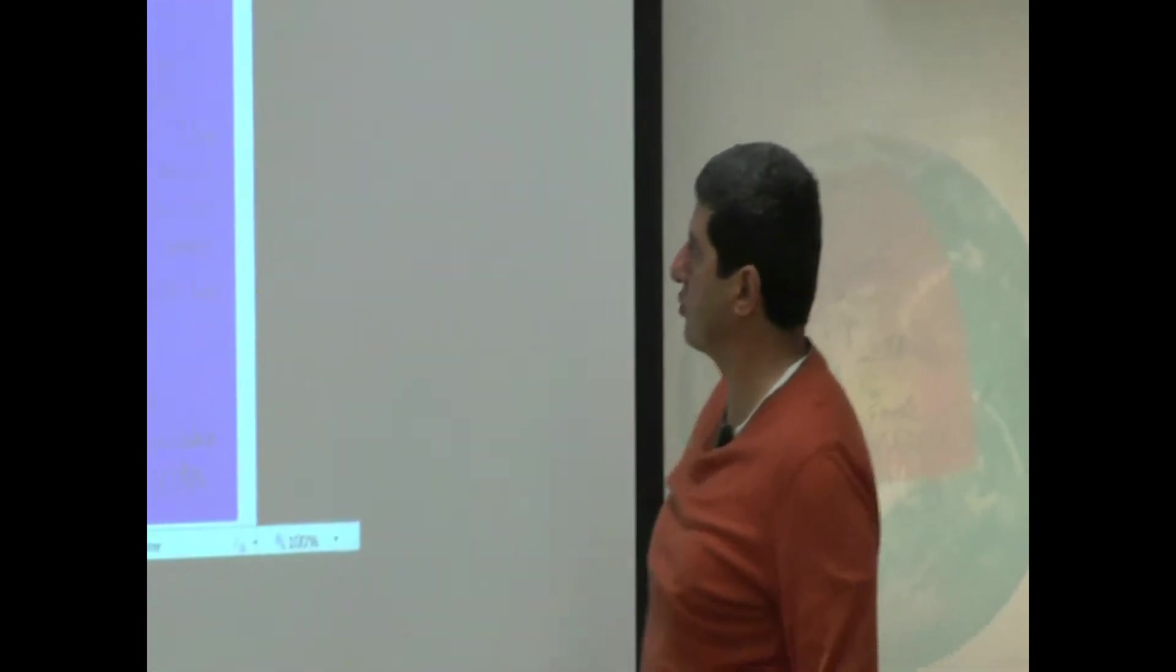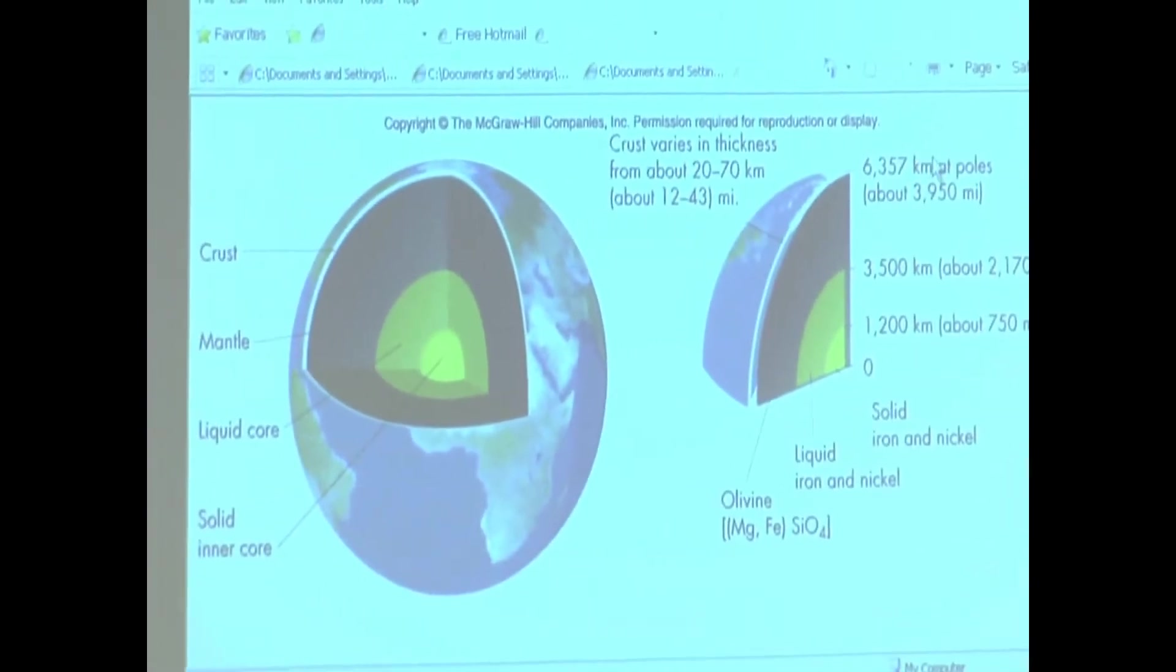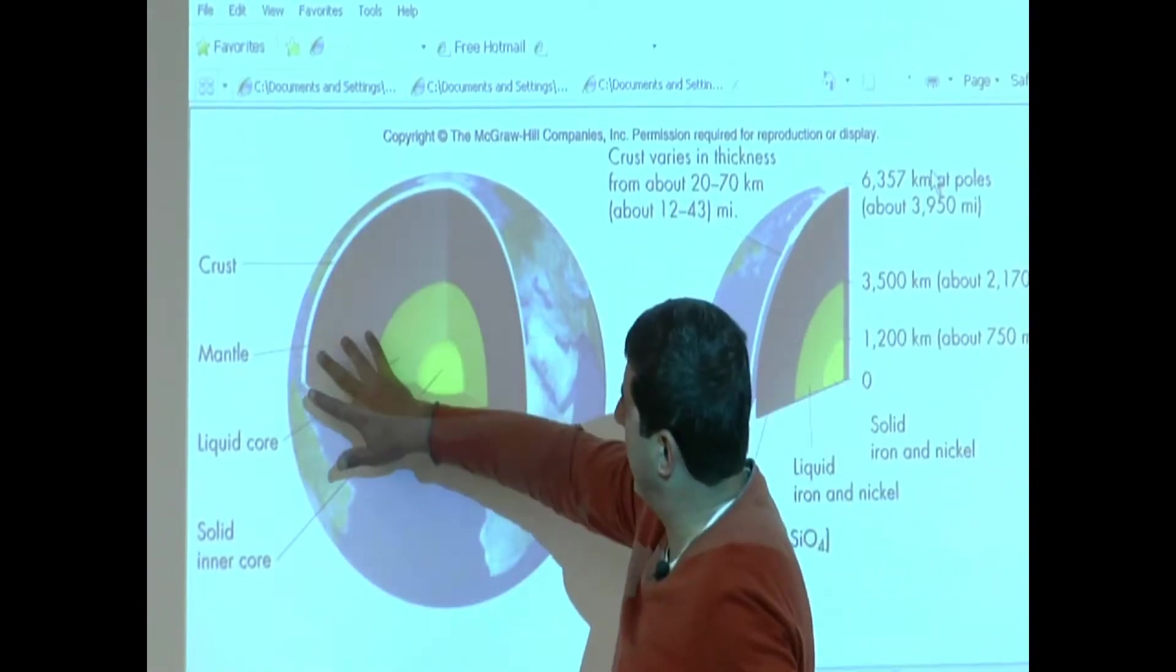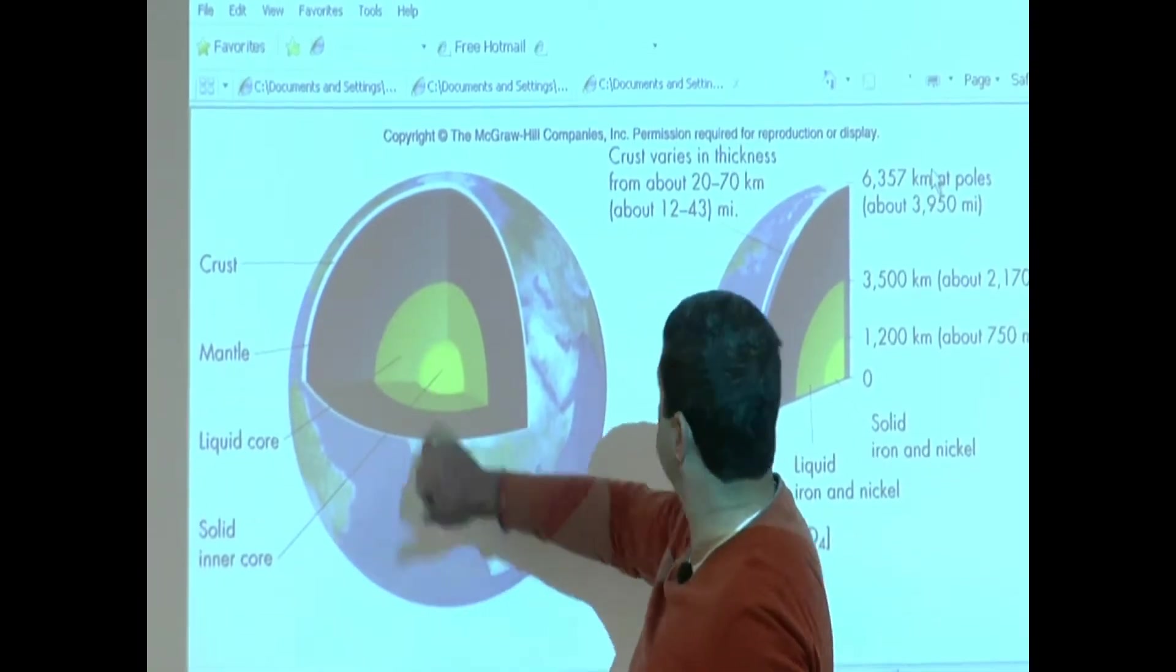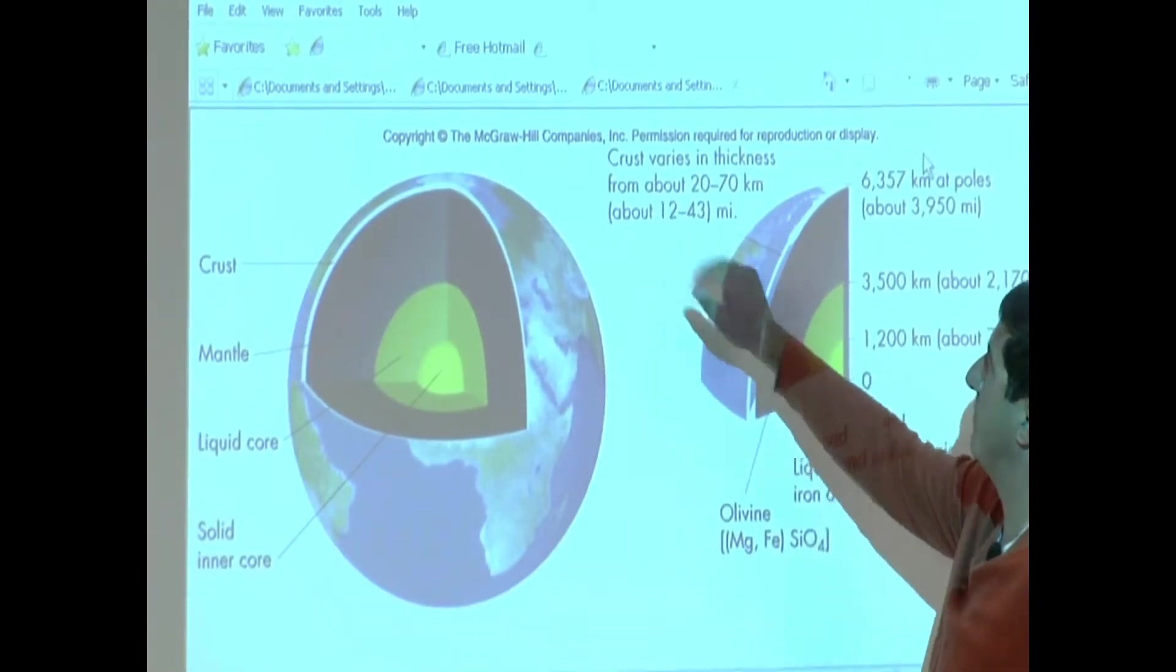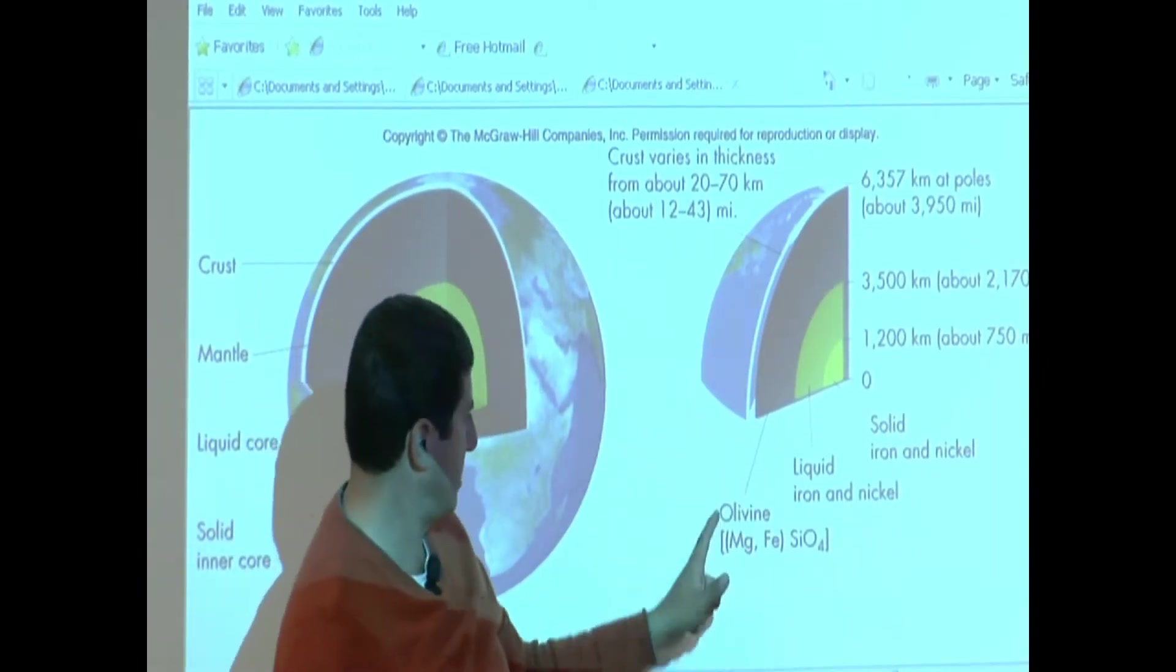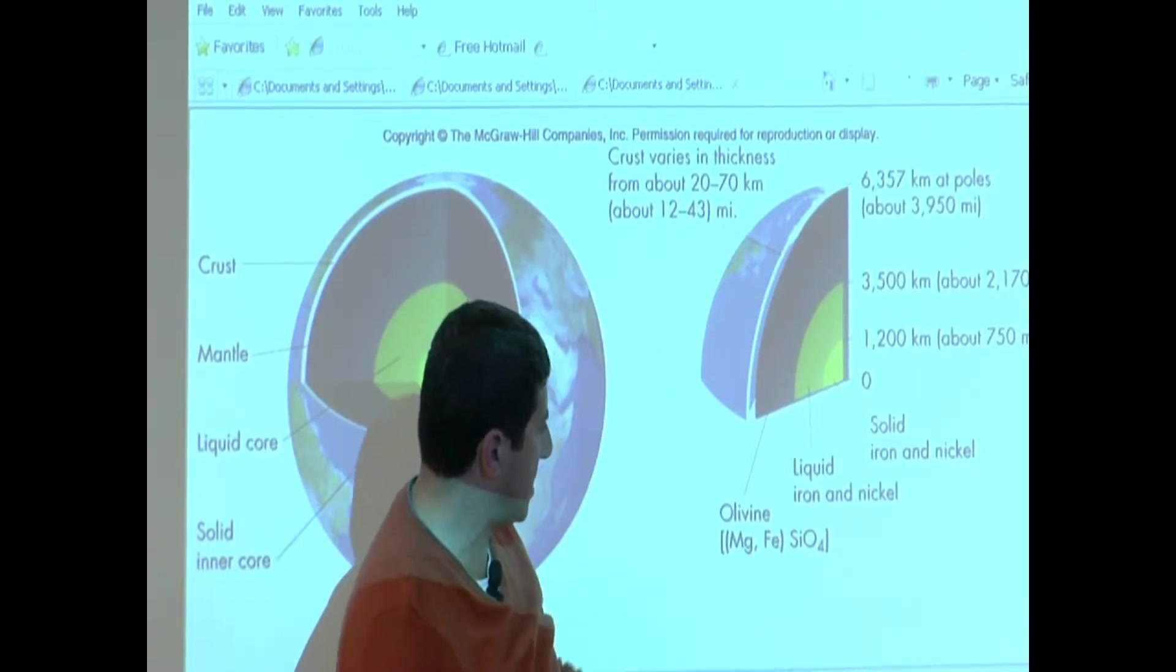We can see another picture of it here. This is a little bit different view. Here you can see the crust, mantle, liquid outer core, solid inner core. The other thing good about this one is it tells you what it contains: olivine, magnesium, iron, silicon oxides.